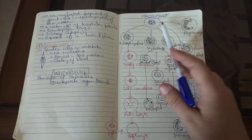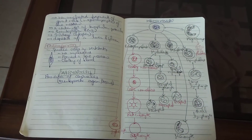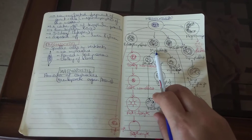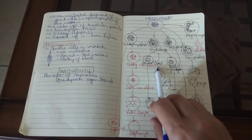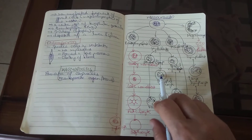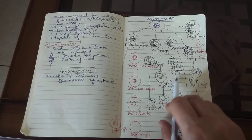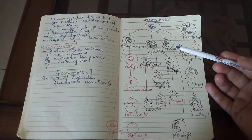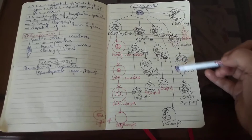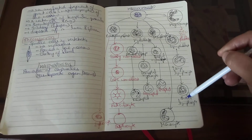Leukopoiesis also occurs via hemocytoblasts, which give rise to three types of precursor cells. Myeloblasts have large nuclei and divide to form neutrophil myelocytes, eosinophil myelocytes, and basophil myelocytes, which give rise to their respective leukocytes. Monoblasts result in the formation of monocytes. Lymphoblasts result in the formation of large lymphocytes, which later form small lymphocytes.